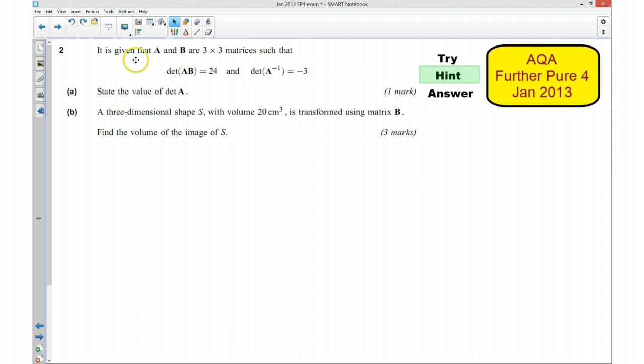In the question here, we know that A and B are three by three matrices and we're given the determinant of AB. So that's telling me if there was a transformation B followed by a transformation A, the volume scale factor of that would be 24, so the volume would have increased by a factor of 24. And I'm also told that the determinant of the inverse A matrix, where if I undid the transformation A, that would give me a volume scale factor of negative 3.